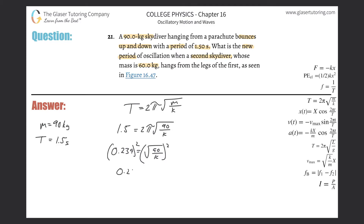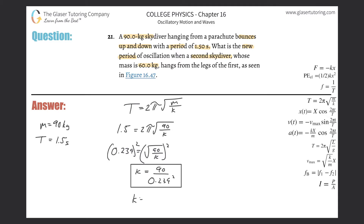Leaving it as 0.239 squared equals 90 over k. Now solve for k using cross multiplication: k equals 90 divided by 0.239 squared. Plugging that into the calculator, this works out to be a force constant of approximately 1,580 newtons per meter. Those are the units for spring constant.